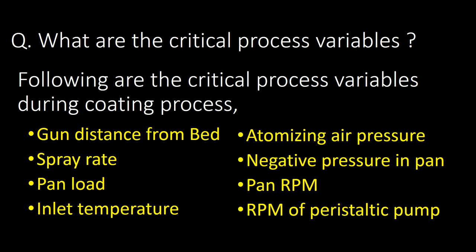What are the critical process variables during the coating process? The critical process variables are: gun distance from bed, spray rate, pan load, inlet temperature, atomizing air pressure, negative pressure in pan, pan RPM, and RPM of peristaltic pump.